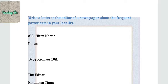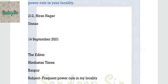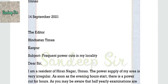The first one is a formal letter — a letter to the editor of a newspaper about the frequent power cuts in your locality. First, write your address: 212 Hira Nagar. Then write the date after leaving a line. Then mention the designation of the receiver — the Editor, The Stand Times, Kanpur.